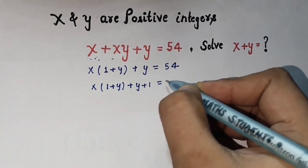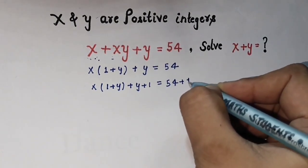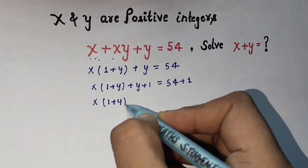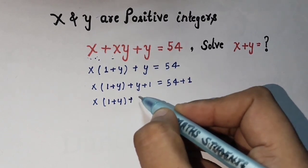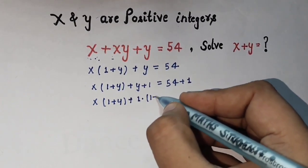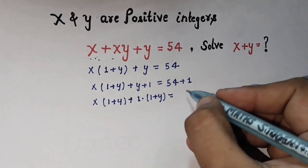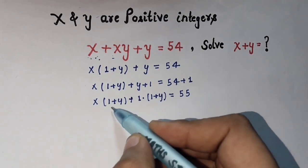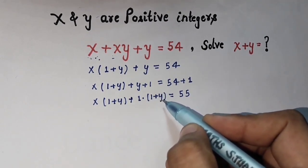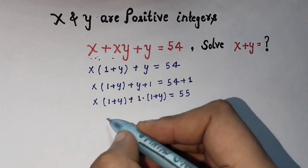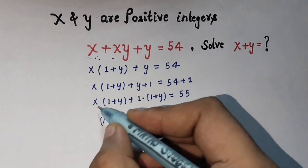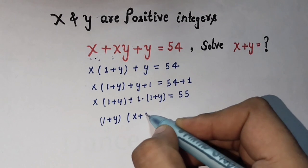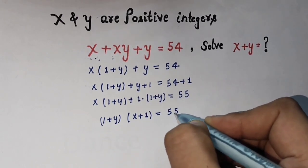Next, we add 1 to both sides: x times (1 plus y) plus y plus 1 equals 54 plus 1. We can rewrite y plus 1 as 1 times (1 plus y), giving us x times (1 plus y) plus 1 times (1 plus y) equals 55. Now we take (1 plus y) as a common factor, so (1 plus y) times (x plus 1) equals 55.